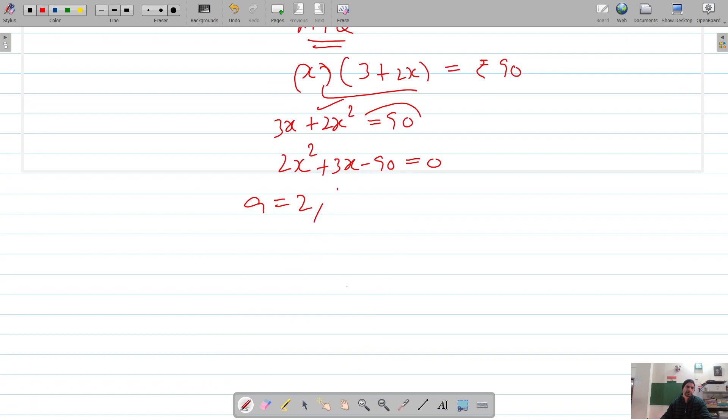The coefficient of x squared is 2, x is 3, and c is negative 90. a times c is 2 times negative 90, which is negative 180.